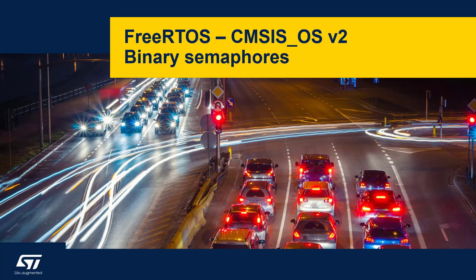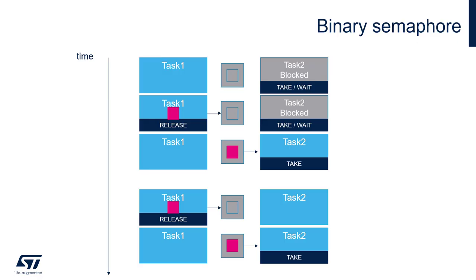Let's have a closer look at binary semaphores implemented within FreeRTOS using CMSIS OS V2. Here we can see an illustration of binary semaphore usage. There are two tasks, task 1 and task 2, on equal priorities.